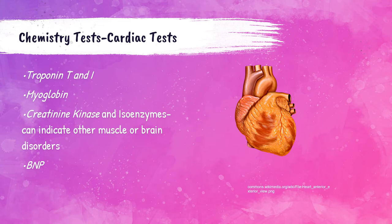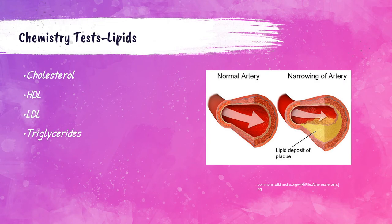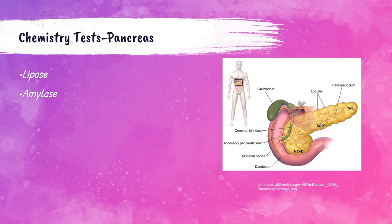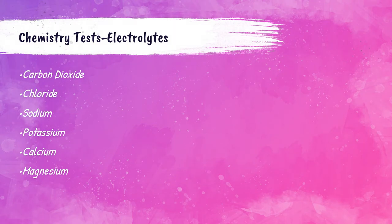Clinical chemistry tests that primarily assess lipid or fat content in the blood are cholesterol, HDL, LDL, and triglycerides. Tests that primarily assess the pancreas are lipase and amylase. Tests that primarily assess electrolyte status are carbon dioxide, chloride, sodium, potassium, calcium, and magnesium.